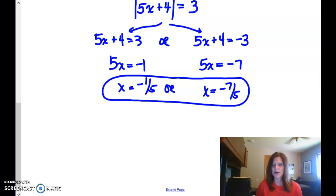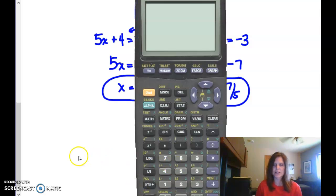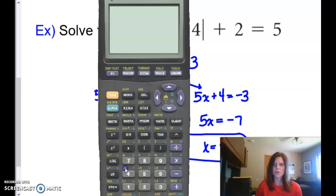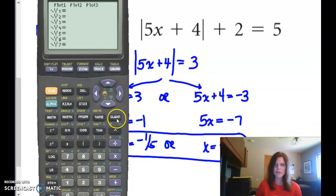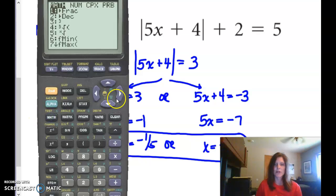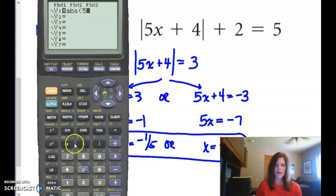These are kind of cool to check on a graphing calculator, so let me show you that super quick. So I'm going to move this over, and I'm going to graph that original equation here in my calculator. Go to y equals, and absolute value is found under the math button. Go over to number, and that abs stands for absolute value. So I want absolute value of the 5x plus 4. Close that, because that's all that's in the absolute value, and then plus 2.